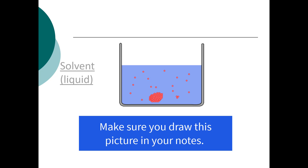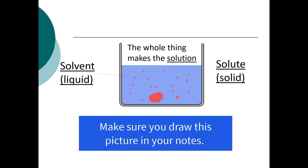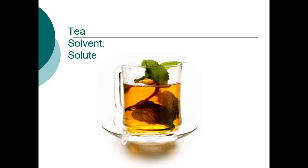Here's a picture of these terms. The liquid in the background is the solvent, the small red solid pieces are the solute, and the whole picture together is the solution. In a cup of tea, your solvent is the water and your solute is the tea leaves, tea powder, or sugar you're dissolving.